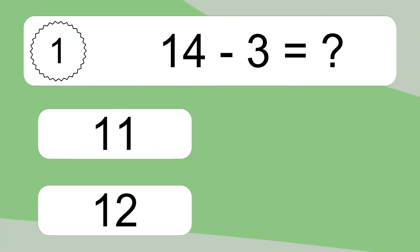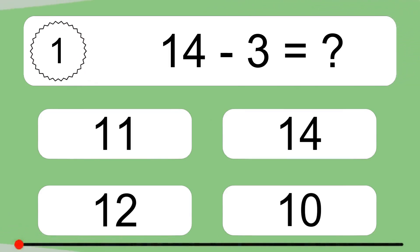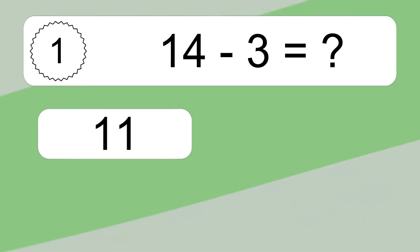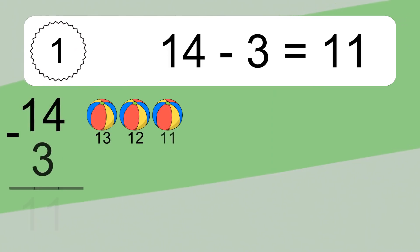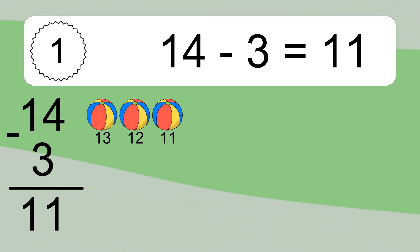14 minus 3 equals what? 14 minus 3 equals 11. Let's count it: 13, 12, 11.